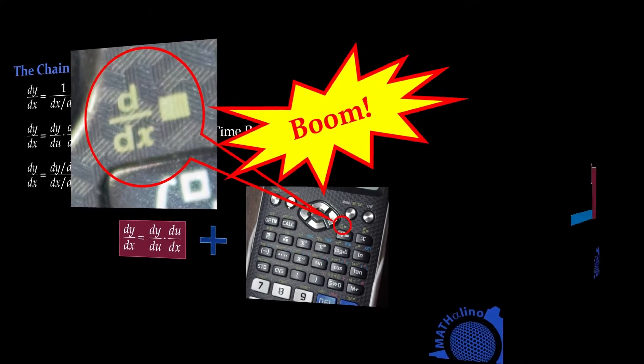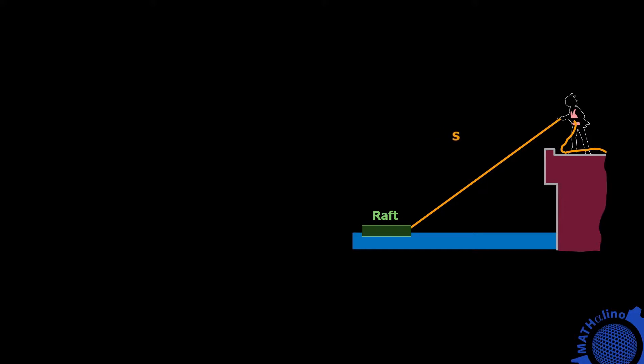Let us dive into some examples. Example number one: we have a girl on a wharf pulling a raft tied to a rope. Let us call S the length of the rope that is out. She is pulling the rope at the rate of 0.9 meters per second — that is ds over dt, the rate of change of S. Her hand is 3.8 meters above the water level. The question is: how fast is the raft approaching the wharf? If we call the distance between the raft and the wharf x, what is required is dx over dt.